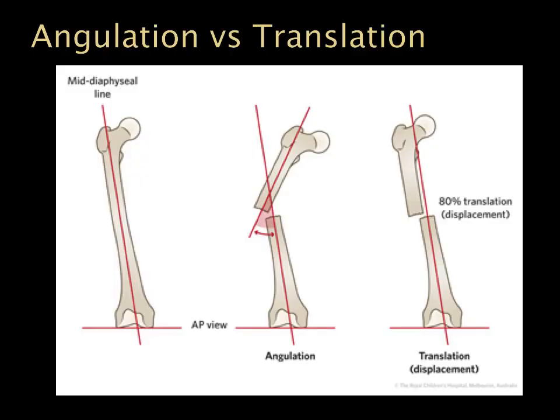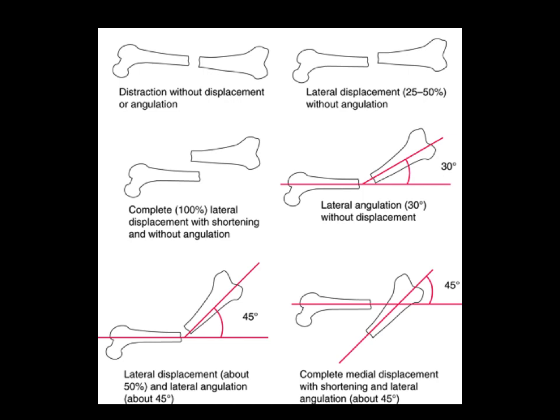Is a fracture angulated, translated, or displaced? We always want to focus on the long axis of the bone — the mid-diaphysial line — and discuss how the fracture fragments relate relative to that axis. You can have a combination of all these fracture patterns including displacement with or without angulation.